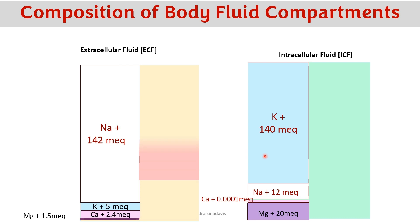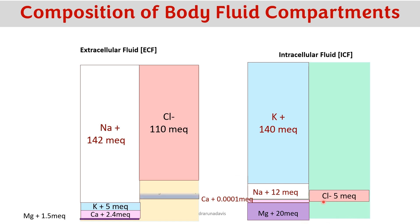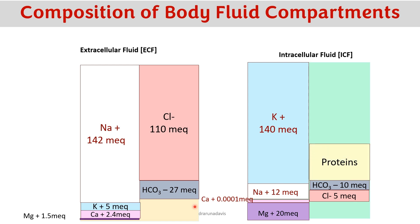Moving to anions: the major anion in extracellular fluid is chloride at around 110 milliequivalents, whereas in intracellular fluid it is only around 5 milliequivalents. Bicarbonate is around 27 milliequivalents in ECF and around 10 milliequivalents in ICF — slightly less than in the extracellular fluid.